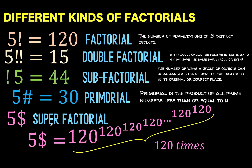Of course, the super factorial of 5 has the highest value. To summarize: 5 factorial is 120, 5 double factorial is 15, the sub-factorial of 5 is 44, 5 primorial is 30, and the super factorial of 5 is this extremely large number. So our answer is that the super factorial of 5 has the highest value among these 5 factorials. There are other factorials we can encounter in our next videos. We hope to see you again. Bye for now.